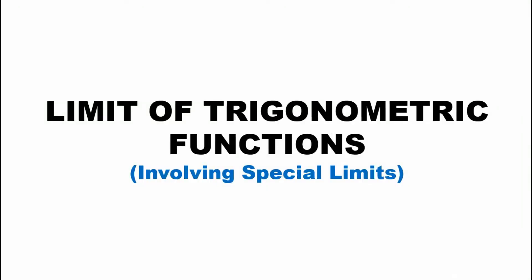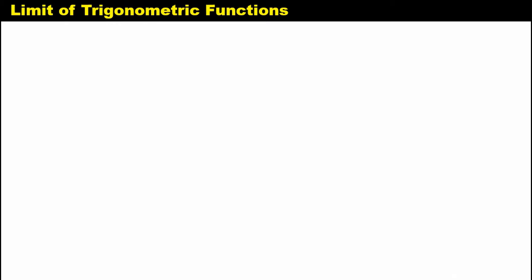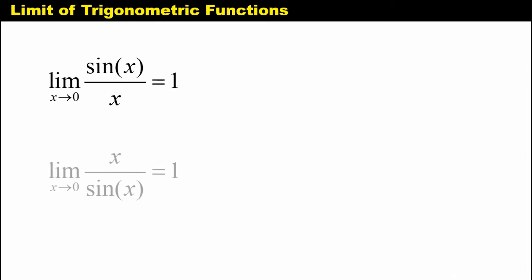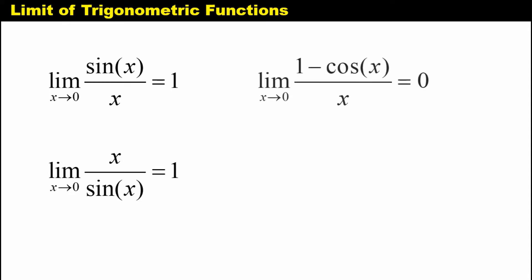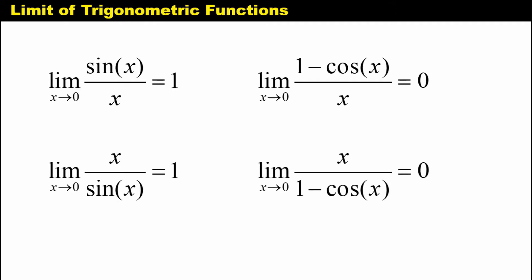Welcome to another video. Today we'll discuss limits of trigonometric functions involving special limits. We will be dealing with four special limits: the limit of sine x over x as x approaches 0 equals 1, the limit of the reciprocal as x approaches 0 equals 1, the limit of 1 minus cosine x over x as x approaches 0 equals 0, and the limit of the reciprocal of that function as x approaches 0 is equal to 0.